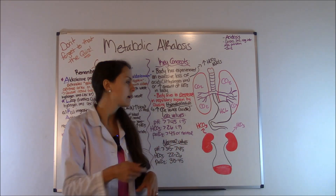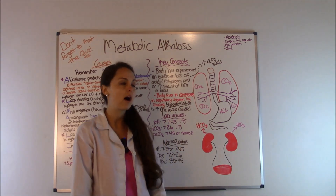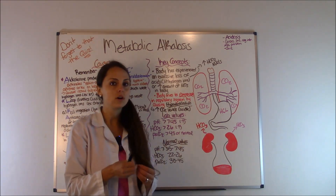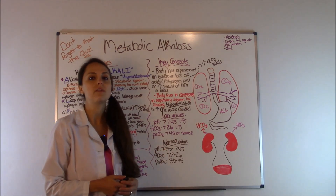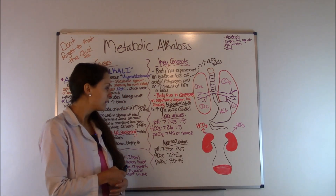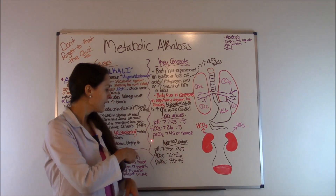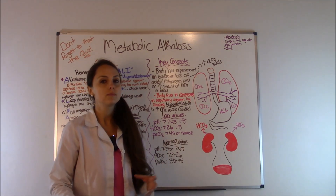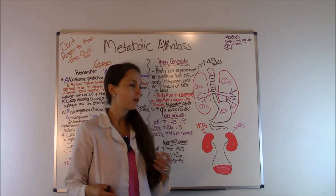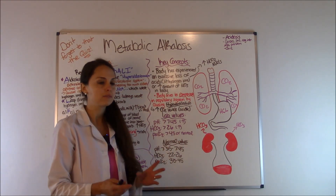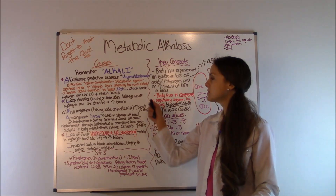Here are the lab values you'll see: blood pH will be greater than 7.45 — alkalotic — because of the excessive loss of acid hydrogen ions. Normal pH is 7.35 to 7.45. Bicarb will be greater than 26 — normal bicarb is 22 to 26. PaCO2 will be either elevated — because the lungs are trying to retain that CO2 acid to balance the body — or normal. Normal PaCO2 is 35 to 45.